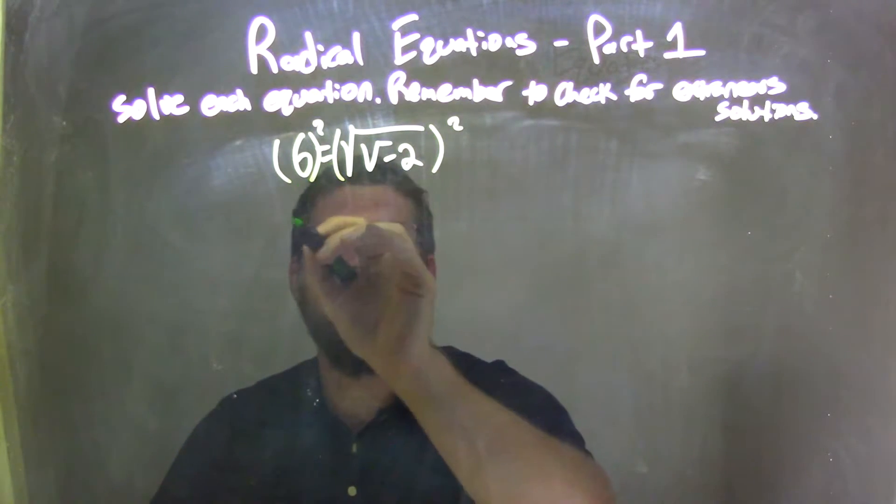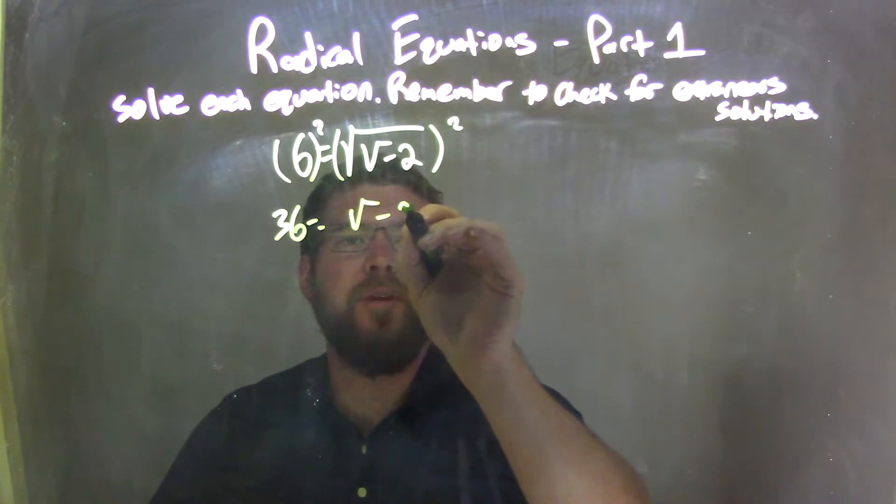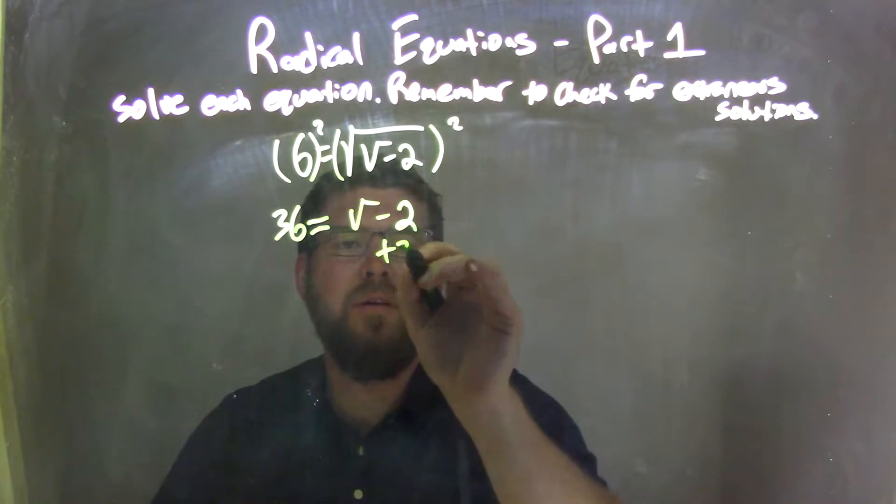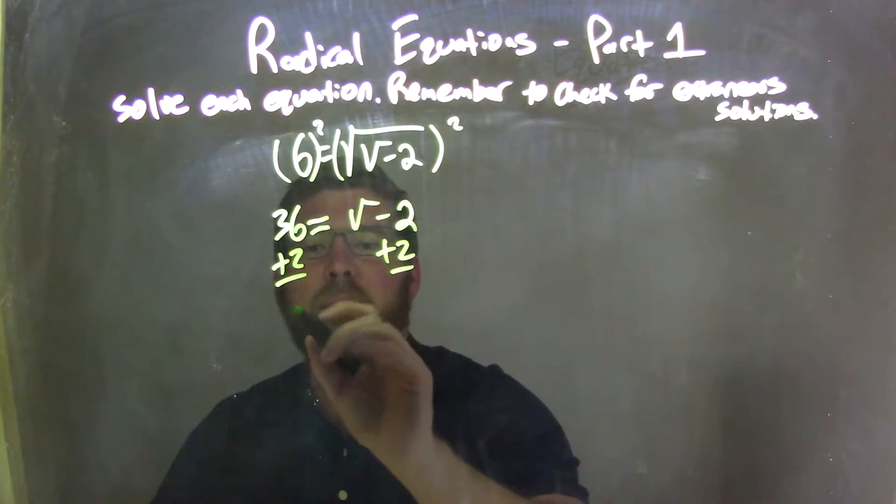Leaving me with 6 squared is 36 equals whatever v minus 2 is, right? Well, v minus 2 is easy. I bring a 2 over. Add a 2 and I'm left with 38.